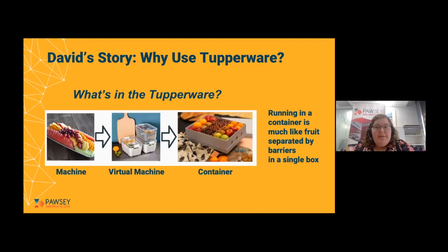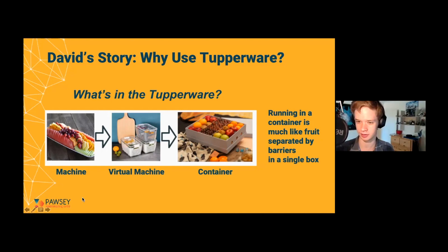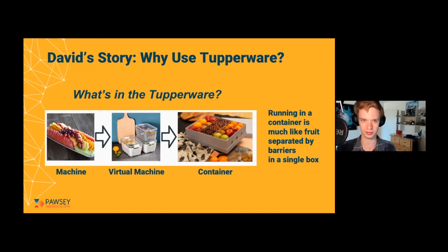Now we're going to listen to David's story about how he used containers. The way that I like to think about containers is kind of like putting pieces of fruit in a box, but there are barriers between the bits of fruit — they don't get mashed up all together. That's what makes containers unique and distinctly different from a machine where you're running a bunch of processes, and virtual machines where you're making entirely different boxes to do everything.